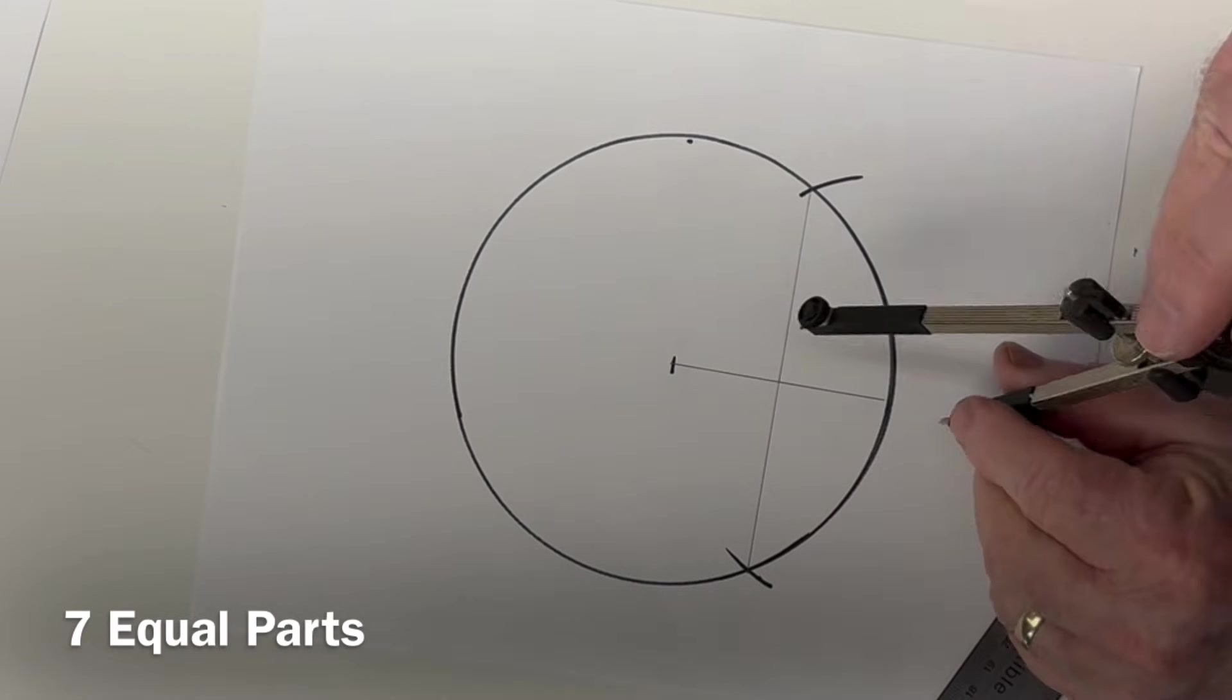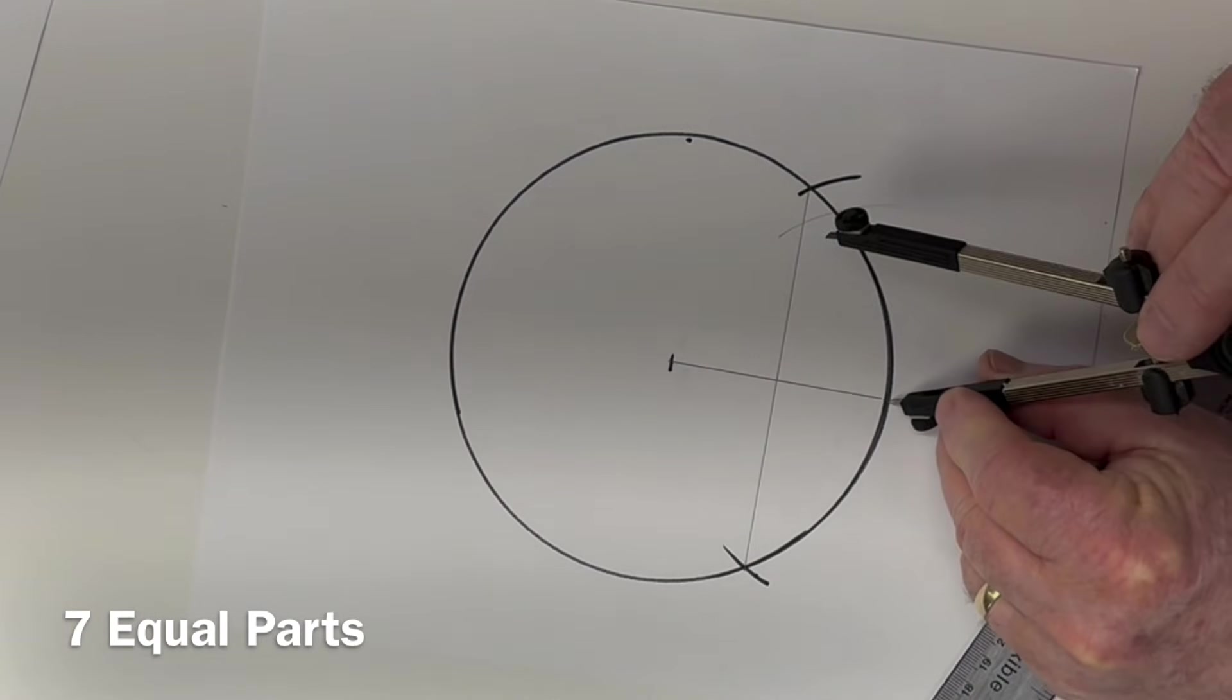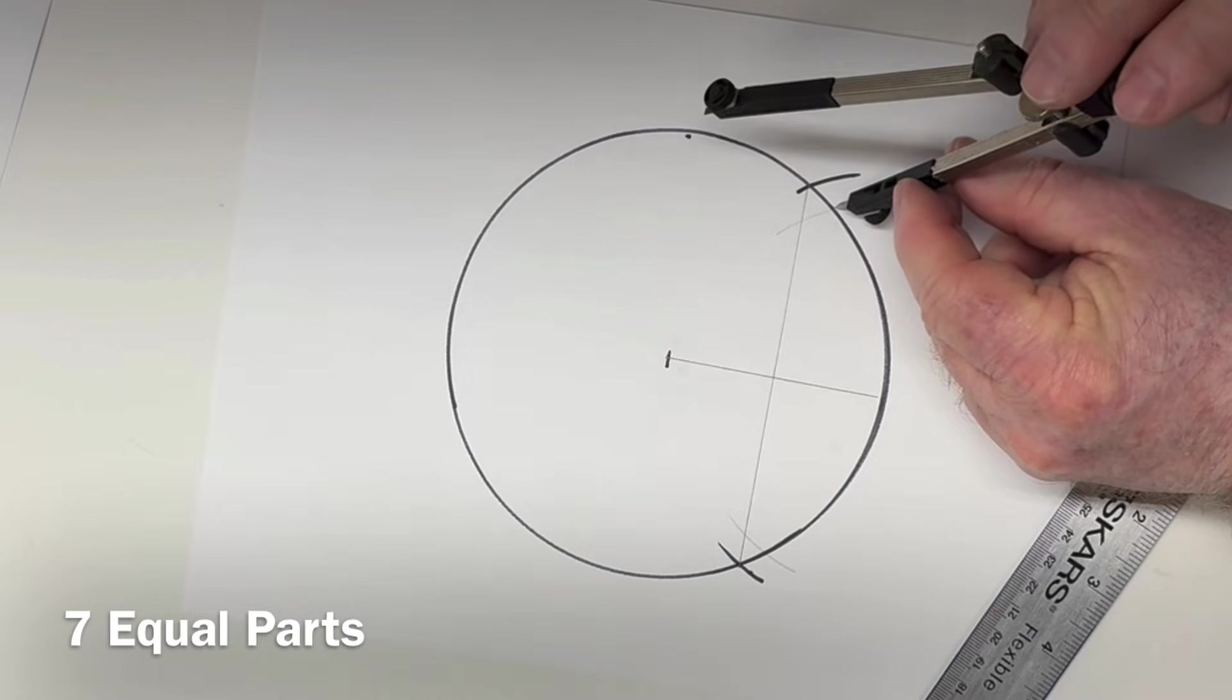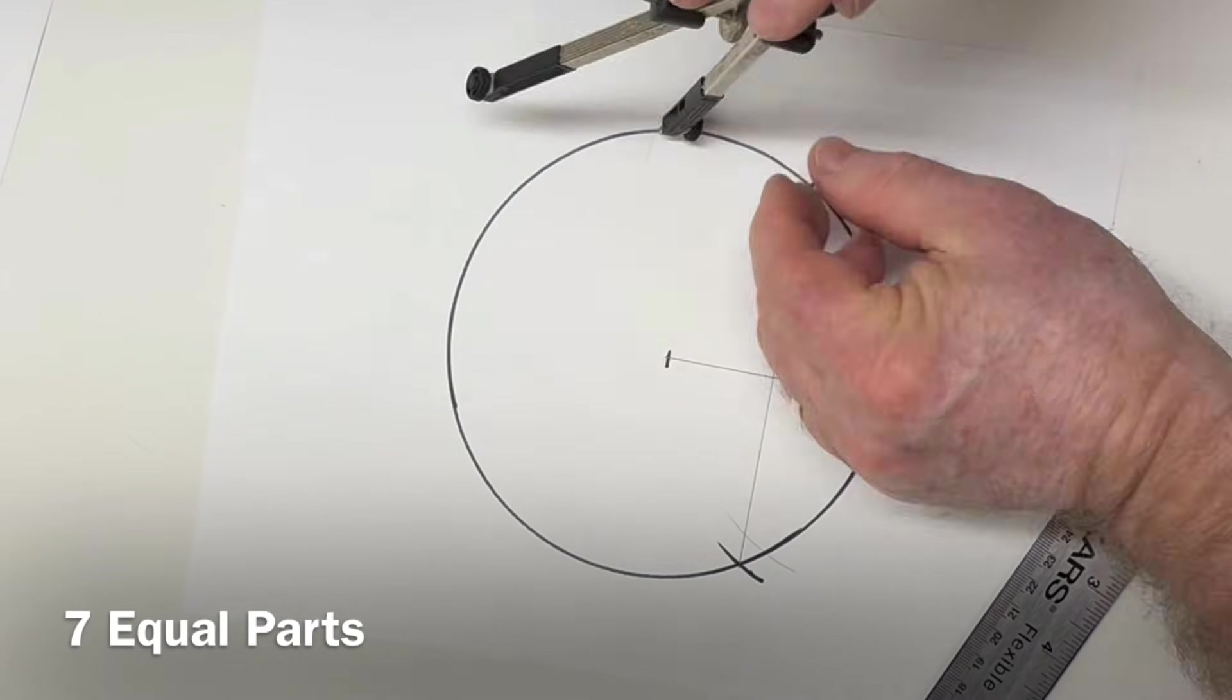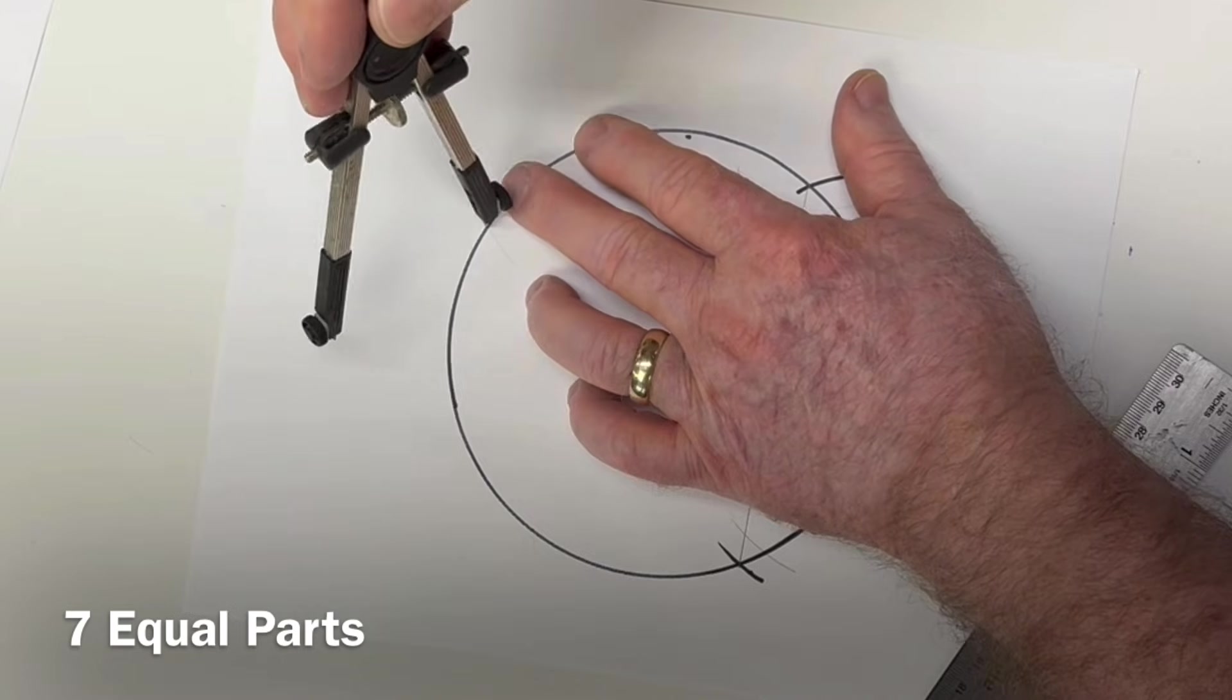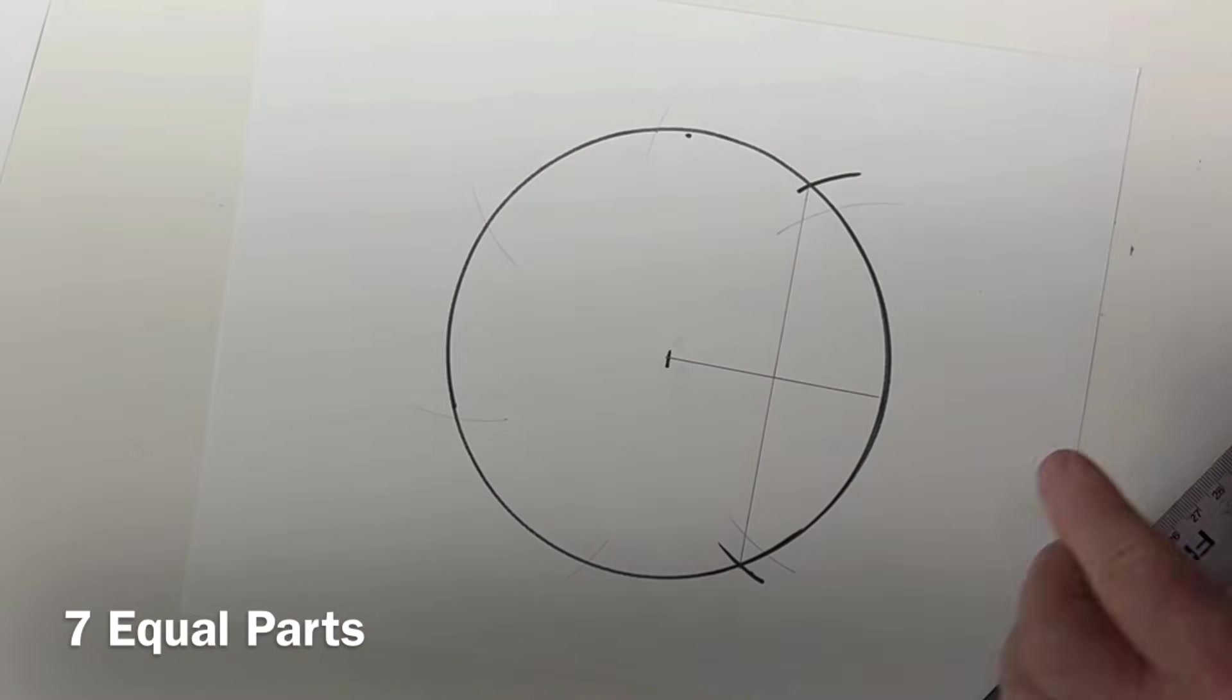So, at this point now, I'll start right here and give myself an arc all the way around. One here and one there. So, that gives me my first two. And this will be three. That's four. There's five. Six. And then this will be back to seven.